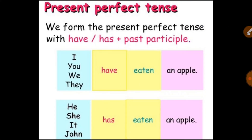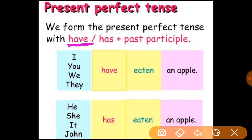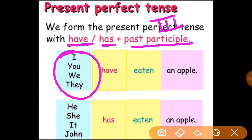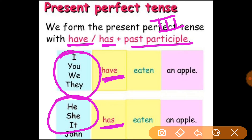We form the present perfect tense with has or have plus the past participle. I have already told you: have is used with I, we, you, and they; has is used with he, she, and it. If there is a particular person's name — like John — that is a singular noun, so you will use 'has.' With plural subjects, you use 'have.' For example: 'has eaten an apple' — where 'eaten' is the past participle, the third form.